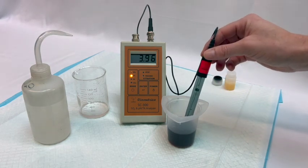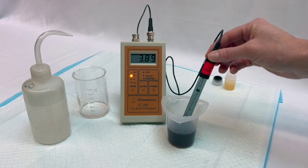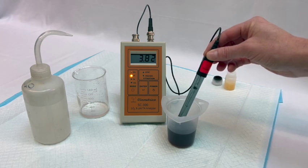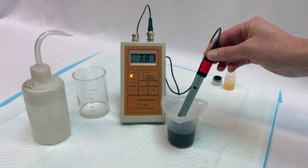With the newer pH electrodes, you do not need to maintain a constant swirling motion while running this test. Simply place your electrode in your sample and give it a quick stir. Allow the unit to stabilize and settle on a pH value and then record your pH.